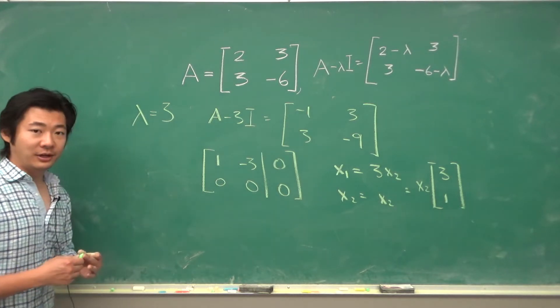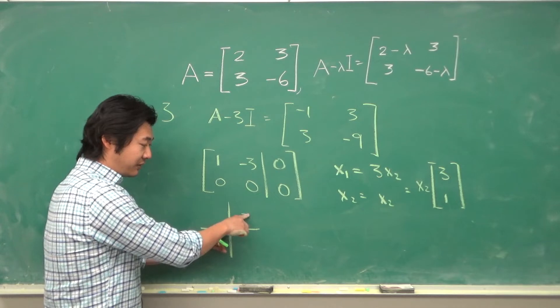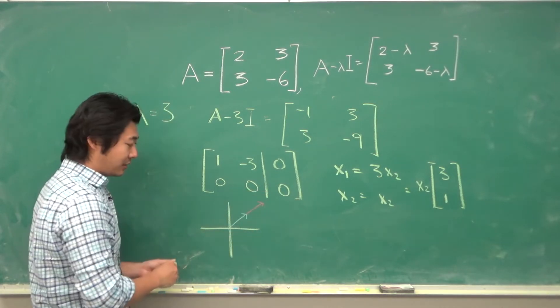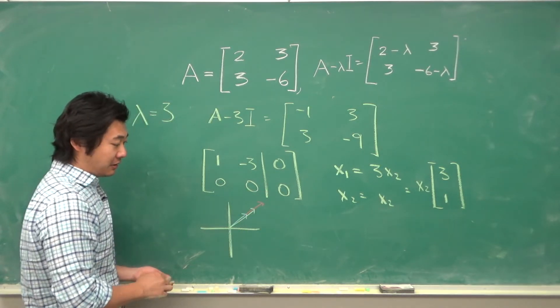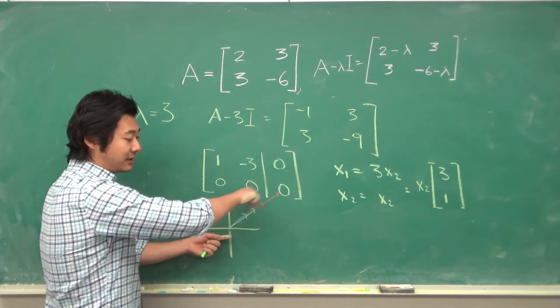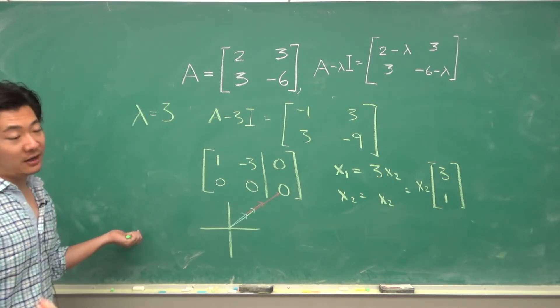Geometrically that's kind of clear because it's a transformation that stretches this vector its eigenvalue amount. So if you start with a longer vector then it's going to just stretch it by the same amount. So it's still an eigenvector corresponding to the same eigenvalue.